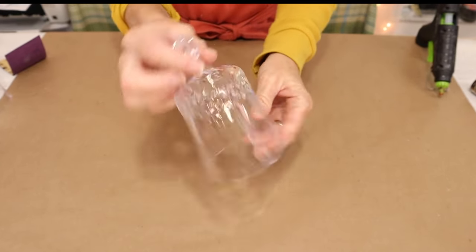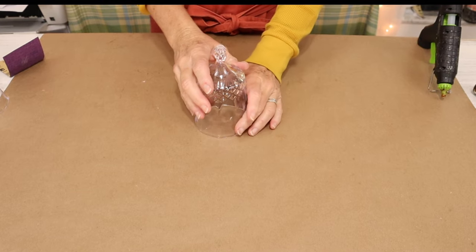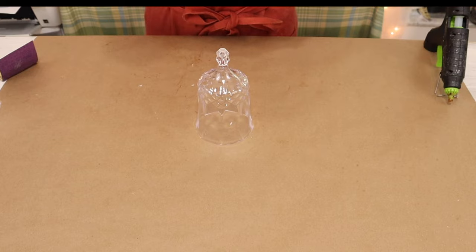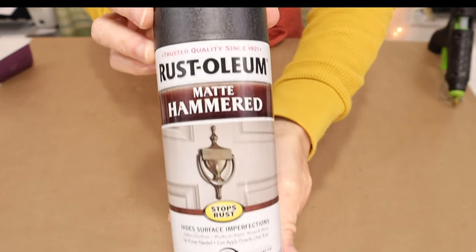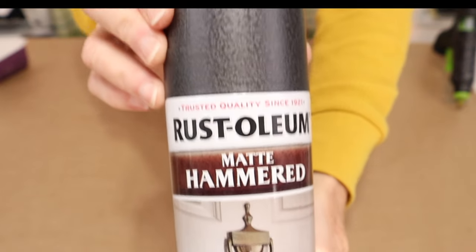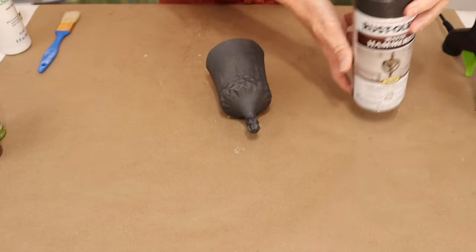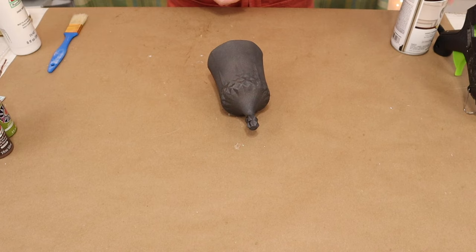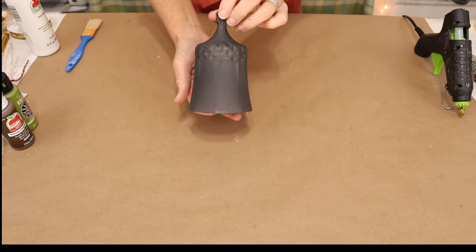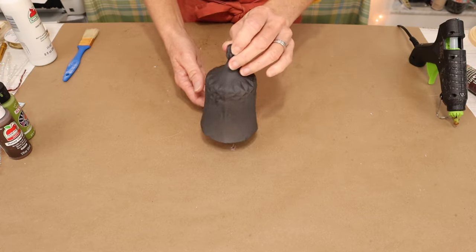That looks so beautiful already. But now we're going to come in and we're going to spray paint our glass. I'm going to be using this matte hammered finish by Rust-Oleum that I purchased at Home Depot. And I think that finish is gorgeous by the way.